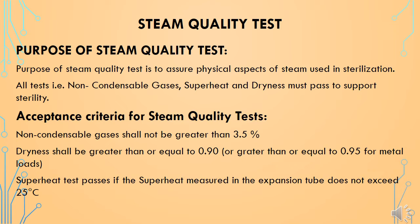The next qualification test is the steam quality test, performed to ensure the quality of steam provided to the sterilizer meets acceptance criteria. In this test we check non-condensable gases, superheat, and dryness of the steam. Acceptance criteria: non-condensable gases shall not be more than 3.5%, dryness shall be greater than or equal to 0.90 (or ≥ 0.95 for metal loads), and the superheat test passes if the superheat measured in the expansion tube does not exceed 25 degrees Celsius.